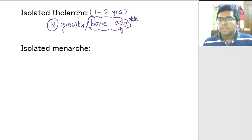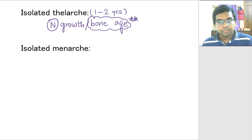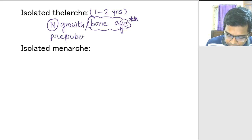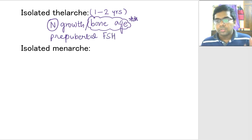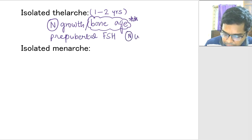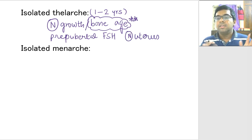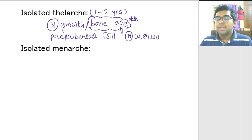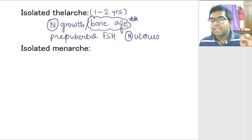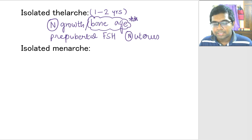If we do estimation of gonadotropins in this child, the levels will not be like that of puberty — it will be pre-pubertal levels, and very importantly, pre-pubertal FSH levels. Third, if you do an ultrasound, you will find a normal size of the uterus. That does not happen in normal puberty where there may be some enlargement. These are the points which will tell you the child has only isolated telarche and not puberty itself. This avoids unnecessary investigations and treatment — the only treatment required is reassurance.